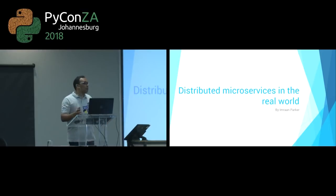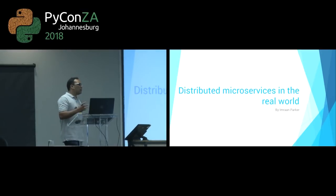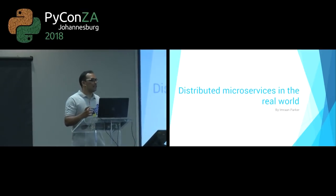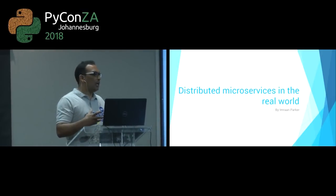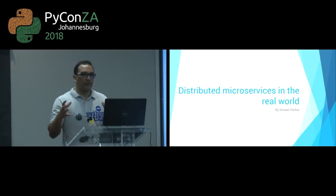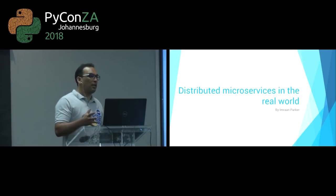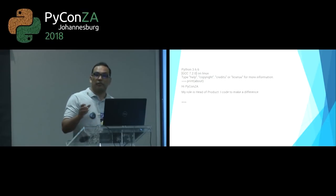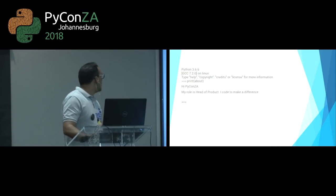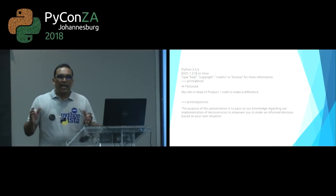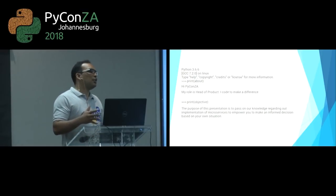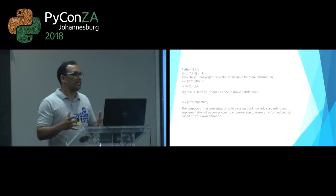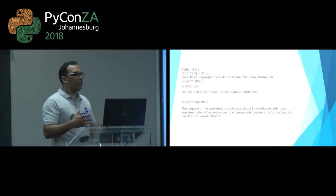I'm super excited to be here today to let you know what we've been doing at Career Junction. We've been running microservices for about six years now. I'm going to share what we've done, how we've done it, and how we moved from a monolithic architecture to a microservice architecture and all the lessons we learned along the way.